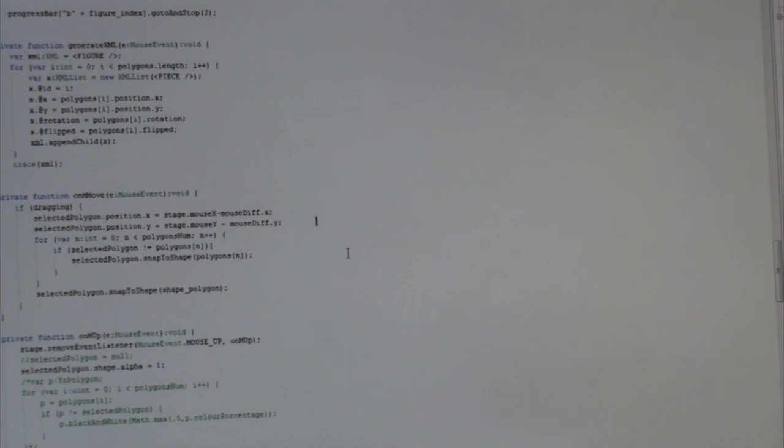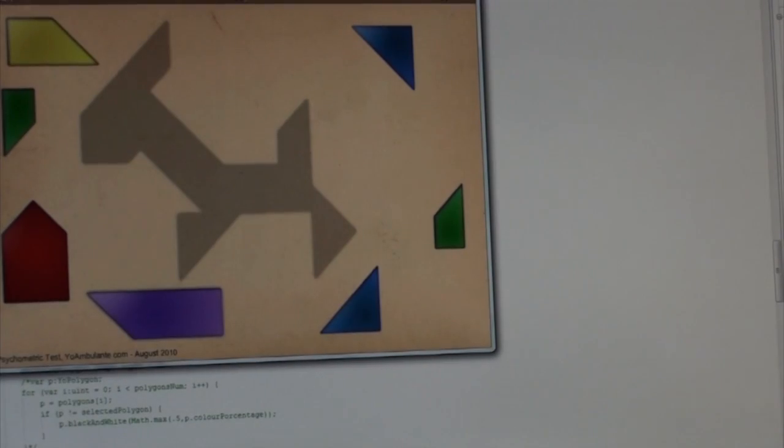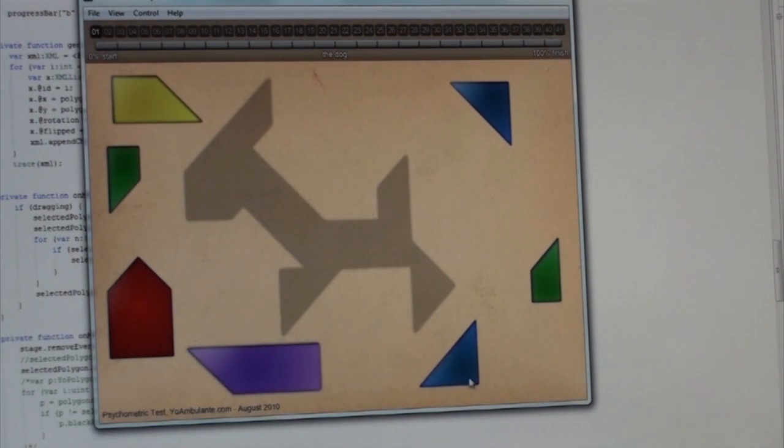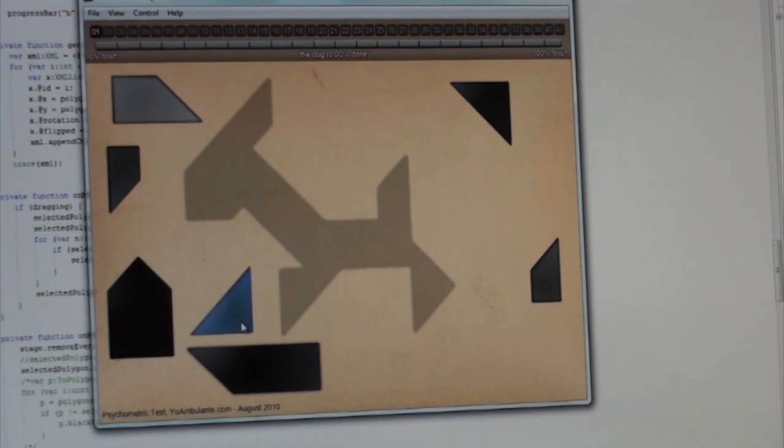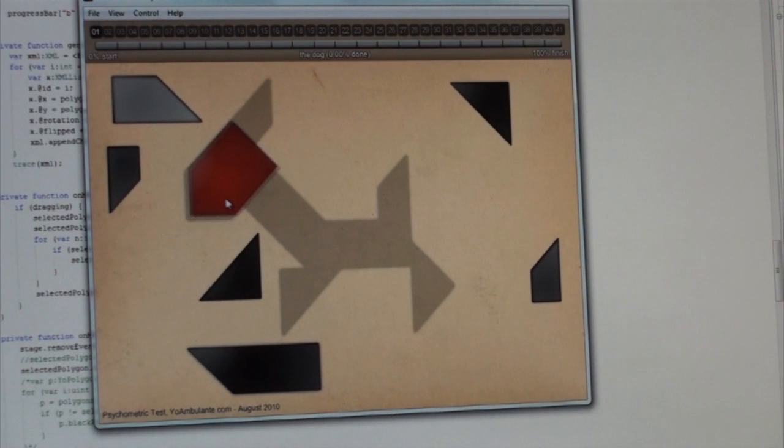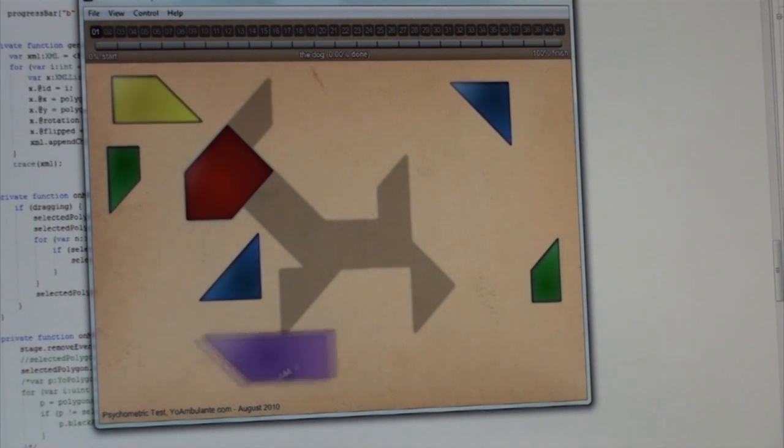The first game I did using this algorithm was this tangram game for snapping objects. So every time you've got a piece that is close to the other one, it will snap each other. It works quite well, even with the other features. It's really interesting how it works.